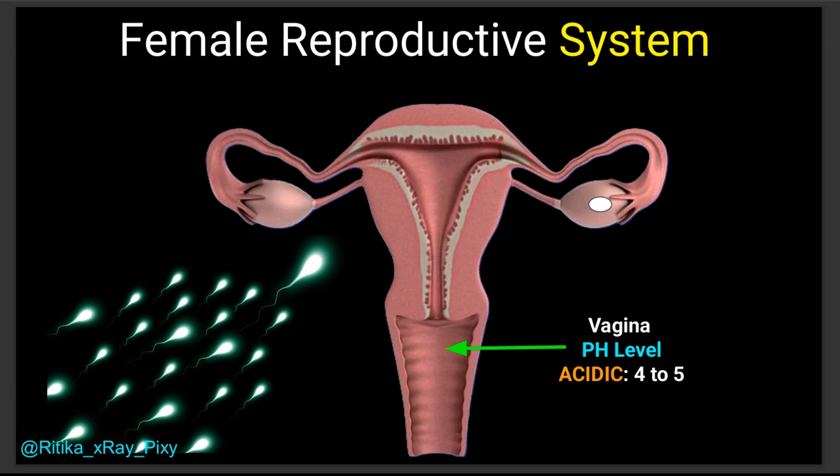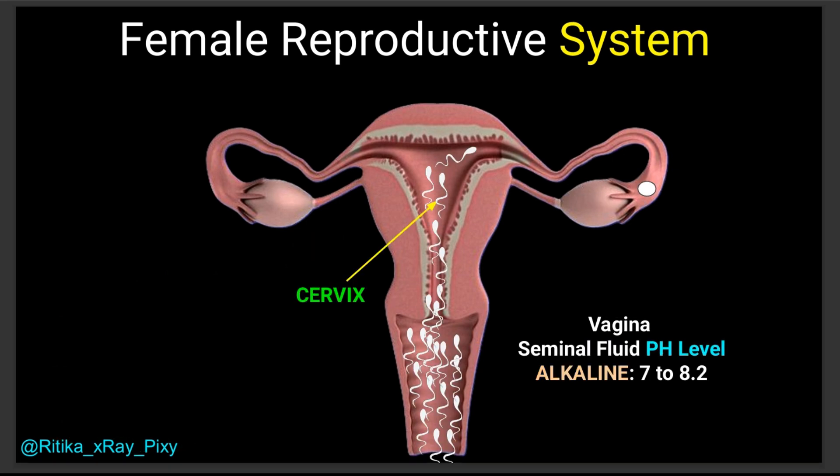During ovulation, the mucus around the cervix becomes thinner, clearer, and more alkaline, which is more friendly for sperm. This protects sperm from the acidic environment of the vagina and allows them to move easily through the cervix towards the egg. The seminal fluid also has a slightly alkaline pH of around 7.2 to 8, which protects sperm from the acidic environment.